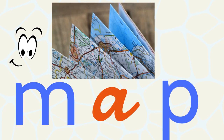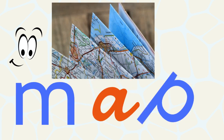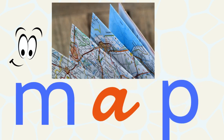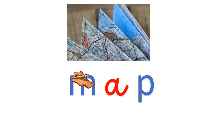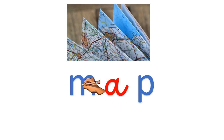When we read the word map, it has three sounds: m-a-puh. When you write the word map, there are three letters: m, a, and p.